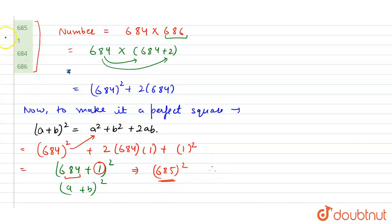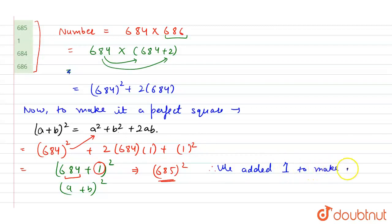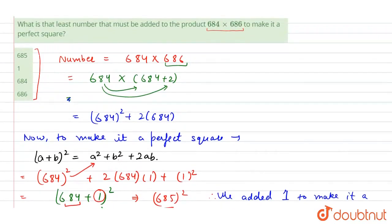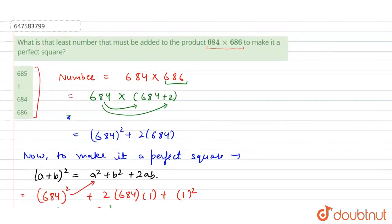So therefore, we added 1 to make it a perfect square. We will check in our options — here is 1 — that means option 2nd is correct.